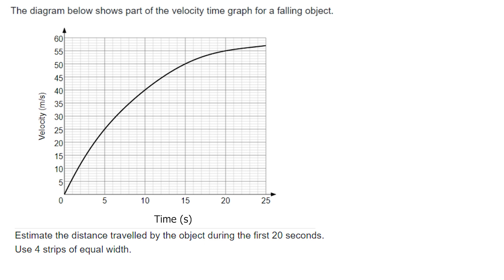The next diagram shows part of a velocity-time graph for a falling object. We need to estimate the distance traveled during the first 20 seconds using four strips of equal width. On a velocity-time graph, the area underneath the graph tells you the distance traveled. We're told to estimate, but that means working out as accurately as we can. With four equal strips between 0 and 20 seconds, each strip has a width of 5 seconds.